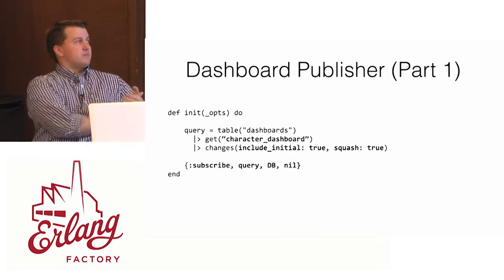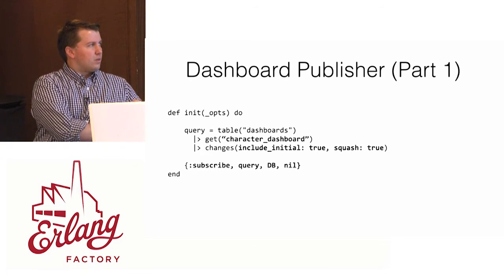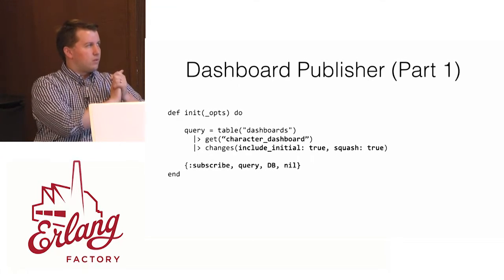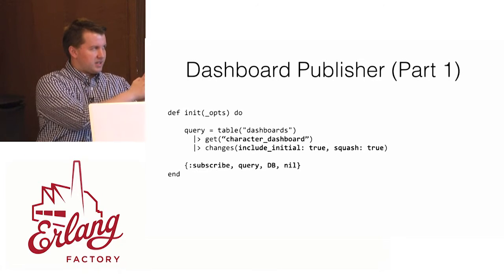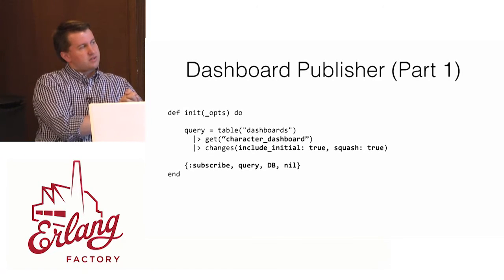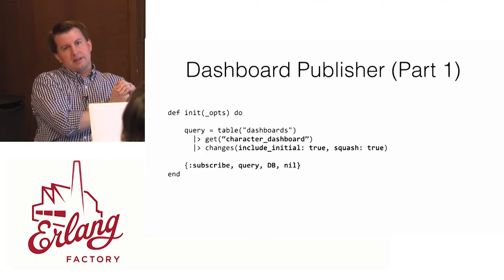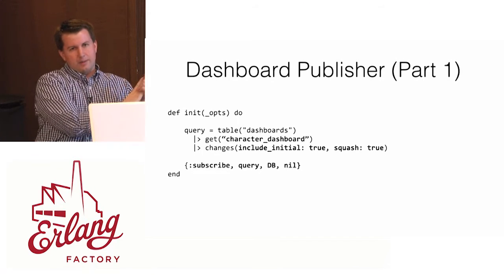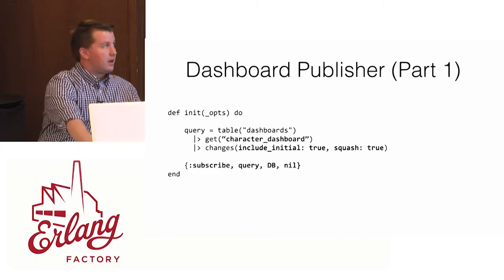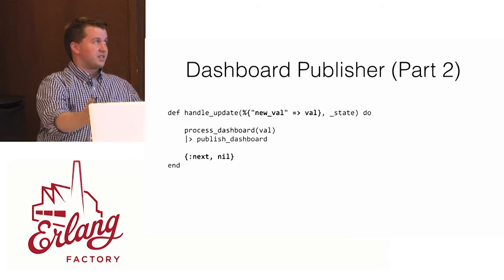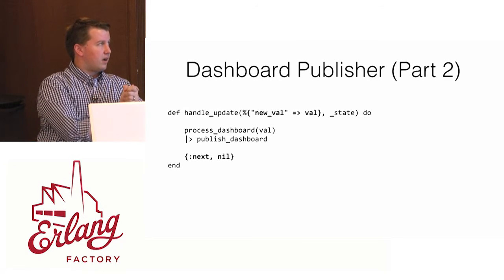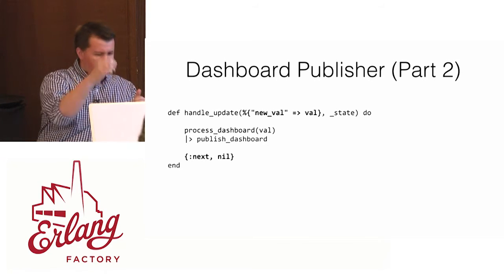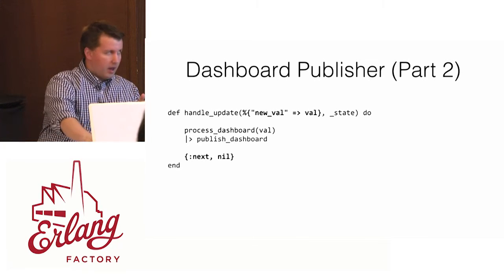The dashboard publisher gets the dashboard, requests initial changes, and uses a squash flag — if there are multiple changes, just squash them together, since we only care about the latest value. In handle_update, this one's easy: we get an update coming in, process it, and publish the dashboard. And that's the application.